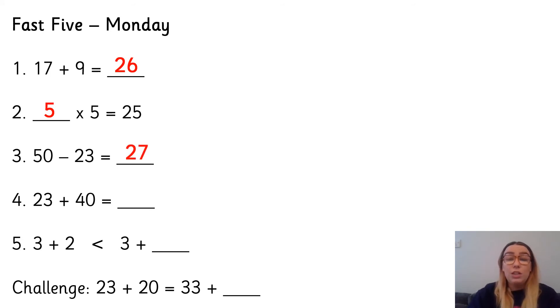Number four, 23 add 40. Now, adding 10s is something that we need to be able to do really quickly in our heads. And we need to remember that we're just looking at the 10s column. The 1s stay the same if we're adding just 10s. And all I'm adding is 4 10s. So if I've got 23 and I'm adding 4 10s, I've got 2 10s add 4 10s, which is 6 10, 60, and my 1s are the same, 63. Well done if you got that right, because I know that was one that we struggled with in class when we were doing it before Christmas.